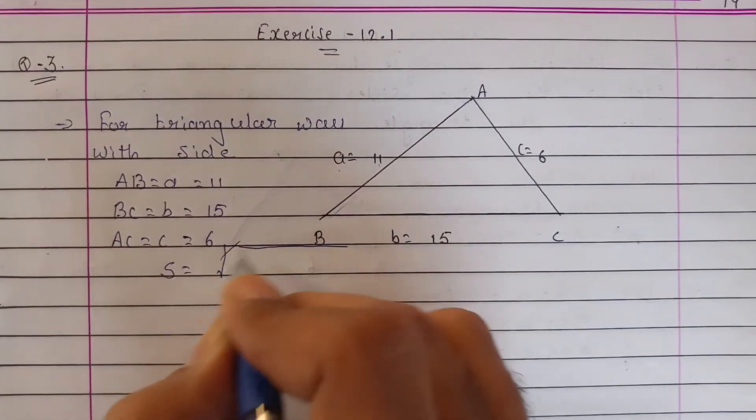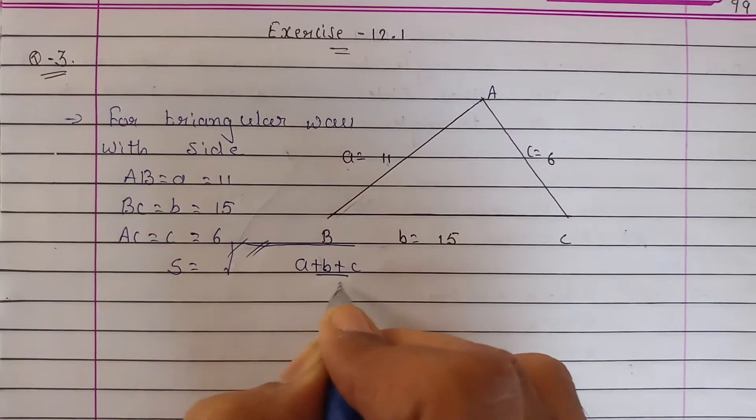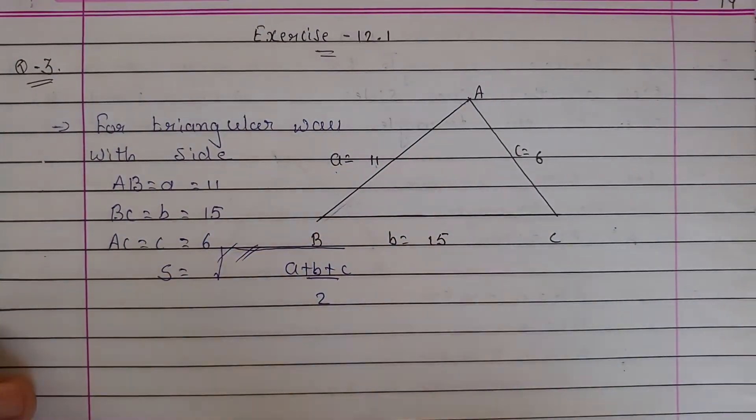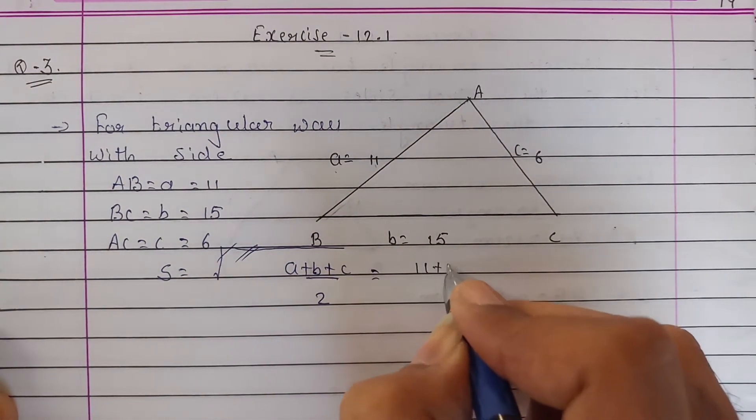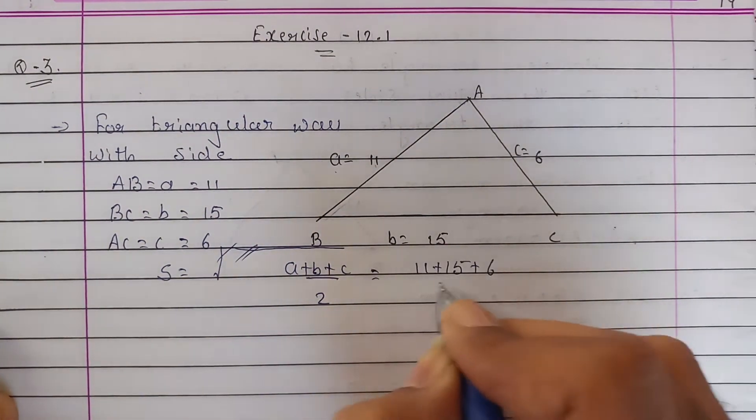s = (a + b + c) / 2. All three a, b, c are given: that is 11, 15, 6, divided by 2.